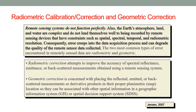Let's elaborate on radiometric calibration and geometric correction. Remote sensing systems do not function perfectly. The Earth's atmosphere, land, and water are complex and do not lend themselves well to being recorded by remote sensing devices that have constraints such as spatial, spectral, temporal, and radiometric resolution. Consequently, error creeps into the data acquisition process, and this can degrade the quality of the remote sensor data collected. The two most common types of error encountered in remotely sensed data are radiometric and geometric.